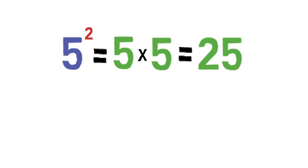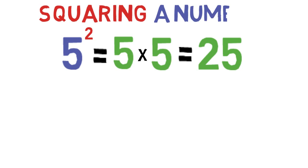This operation is more commonly called squaring a number. Thus, 5 squared equals 25.